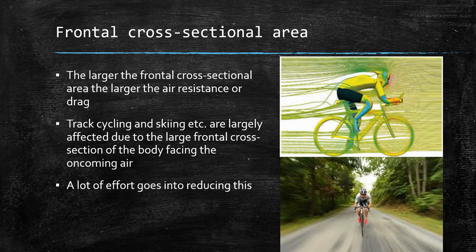Frontal cross-sectional area: the larger the frontal cross-sectional area, the larger the air resistance or drag — think of it as a wall that the air hits, causing resistance. Track cycling and skiing are particularly affected because the frontal cross-section of the body faces the oncoming air. In cycling, the shape of the handlebars forces the cyclist to reduce their frontal area, and in downhill skiing athletes tuck into a crouch position.